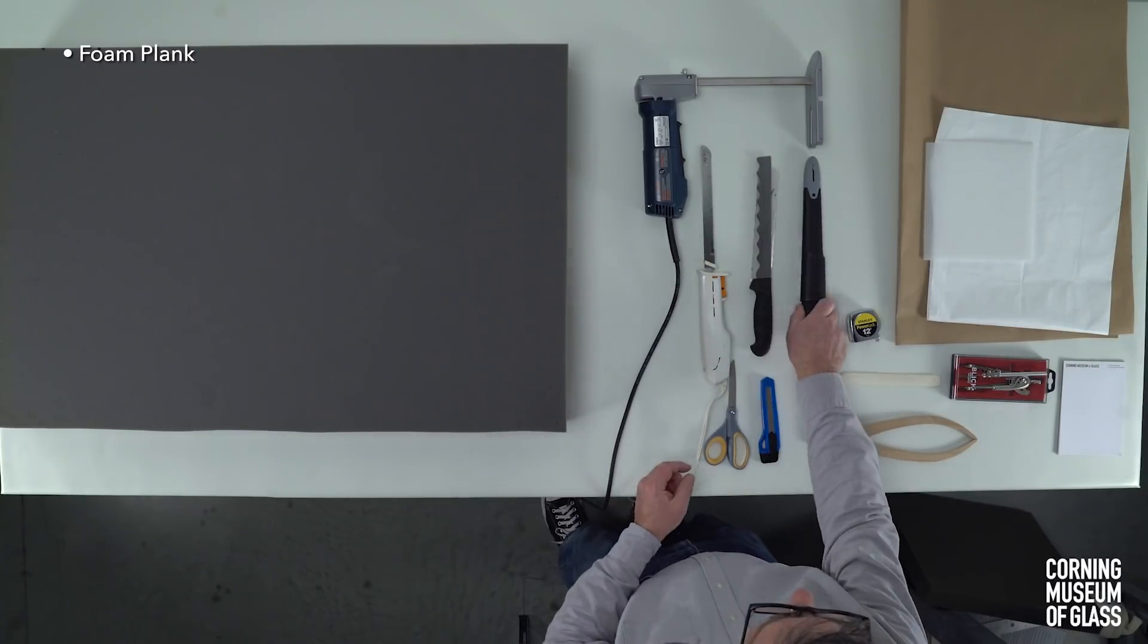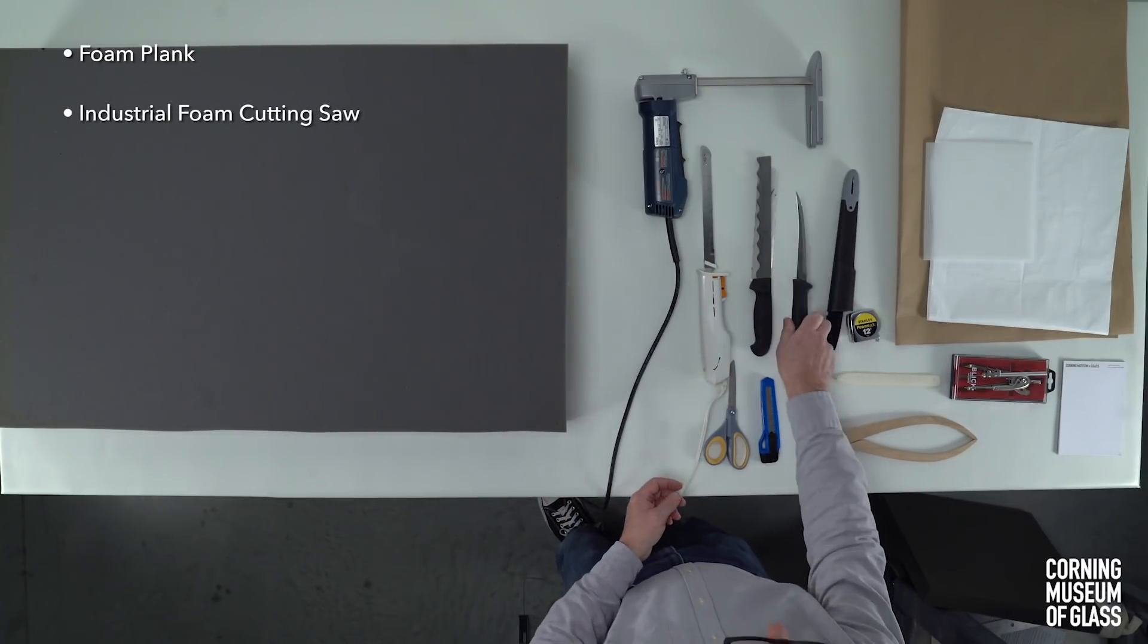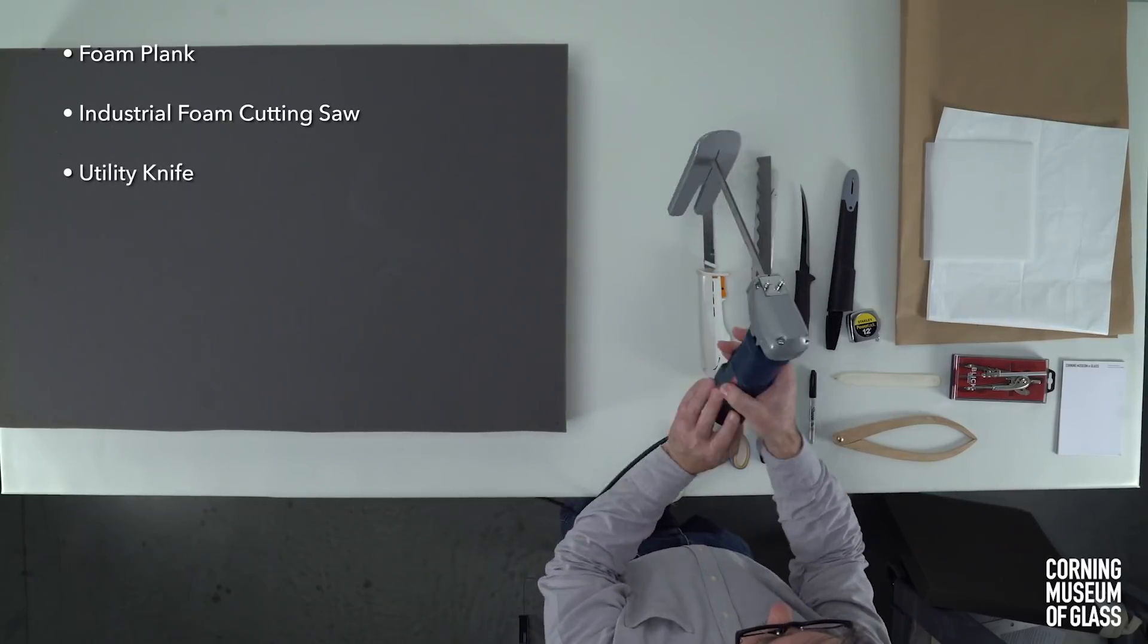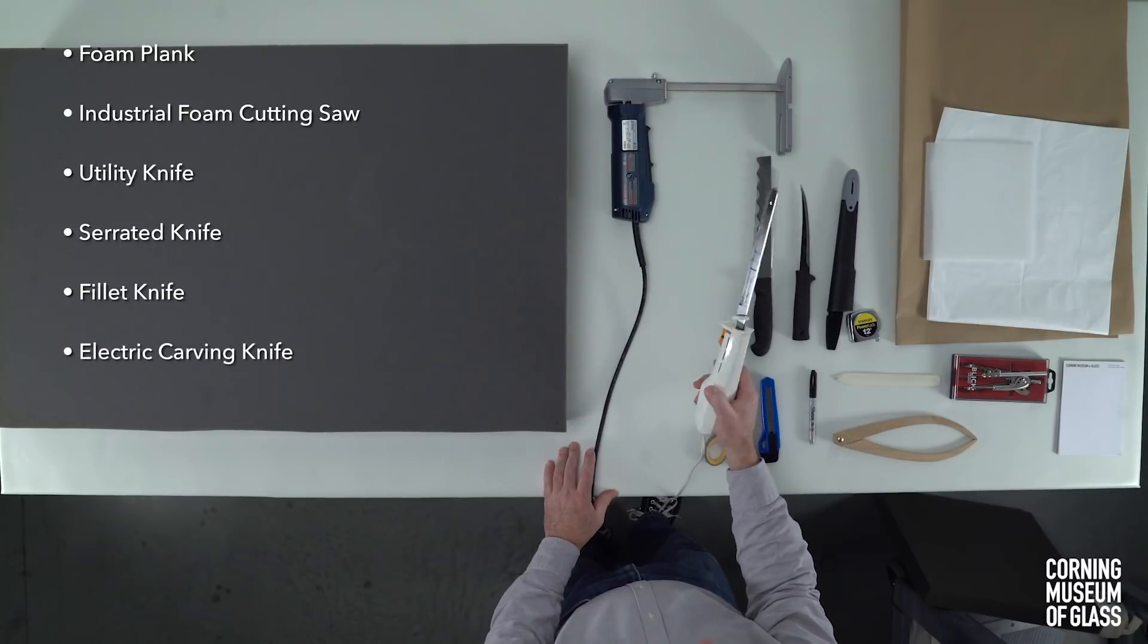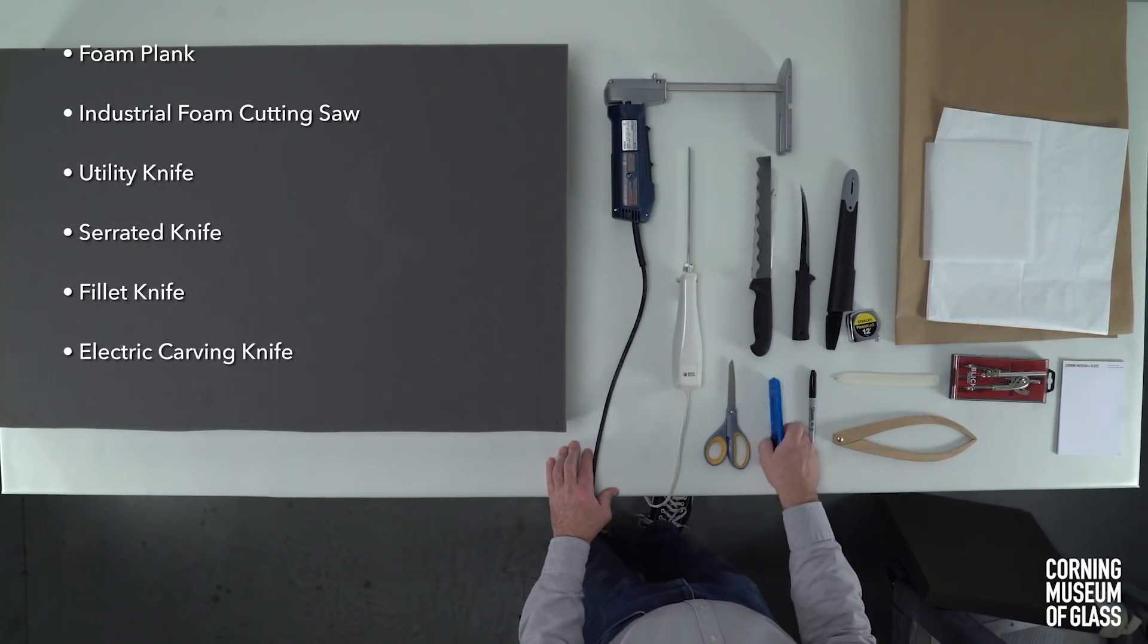Here are some cutting tools, ranging from an industrial foam cutting saw to a common utility knife. These and other options, such as serrated or fillet knives or an electric carving knife, will all work well for cutting a foam cavity.